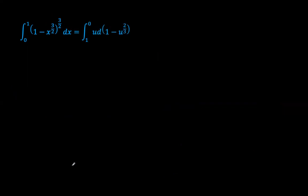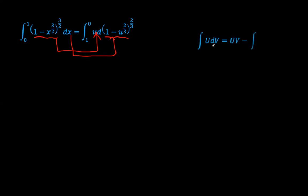Our integral now — the blue integral of 1 minus x to the power 3 over 2, to the power 3 over 2 — becomes u, and dx becomes d of 1 minus u to the power 2 over 3, to the power 2 over 3. The limits have flipped because that's what the substitution demanded. We now have integration by parts where u is our small u and dv is d of 1 minus u to the power 2 over 3, to the power 2 over 3.